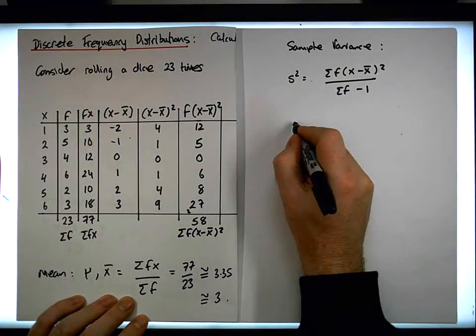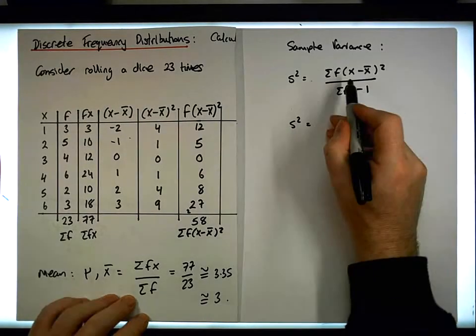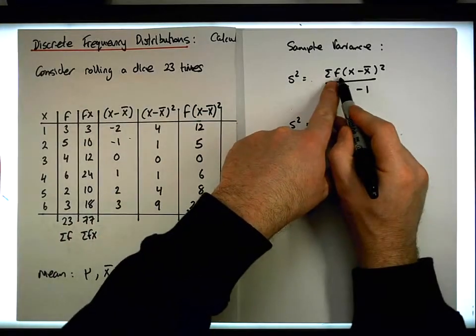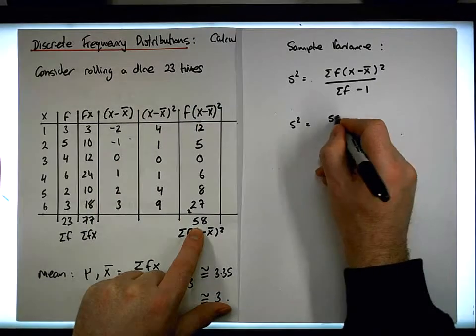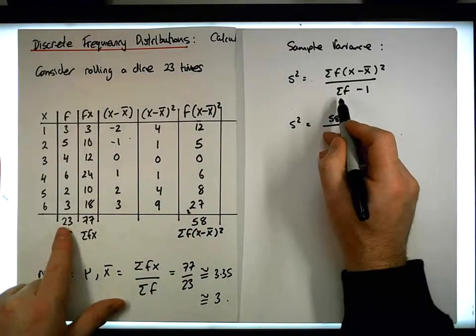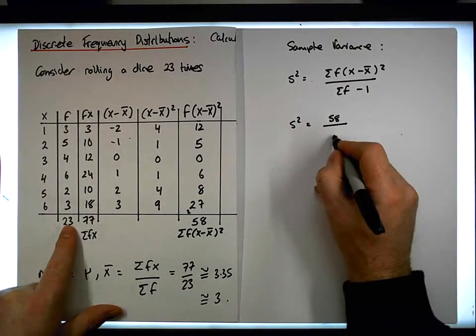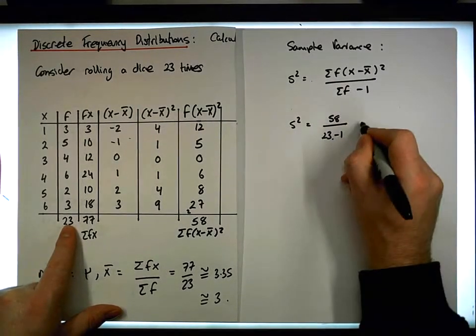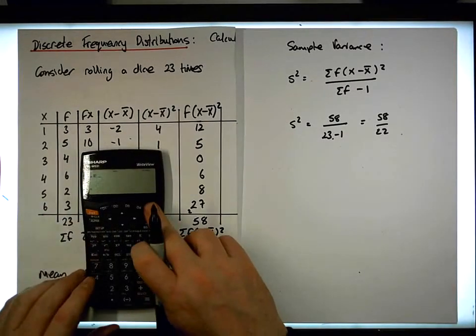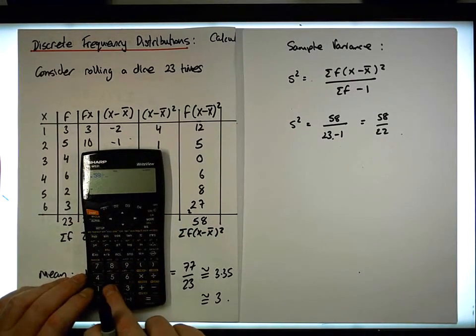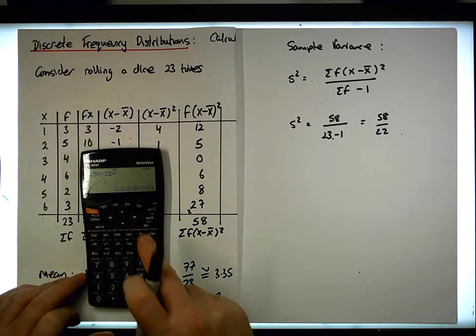So s squared is equal to, well, we've just calculated what the sum of the frequencies times the x minus x bar squared values are. It's 58, which needs to be divided by the sum of the f's, which is 23 minus 1. So it's 58 divided by 22, which goes in about 2 point something times. That's 58 divided by 22 gives a value of 2.